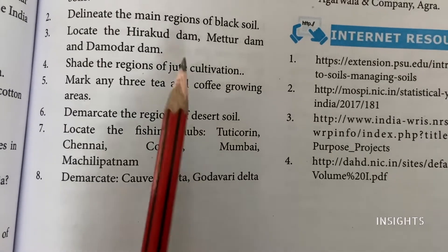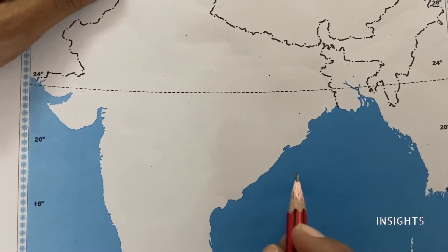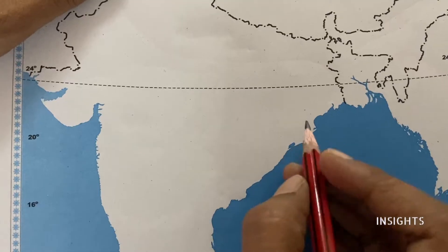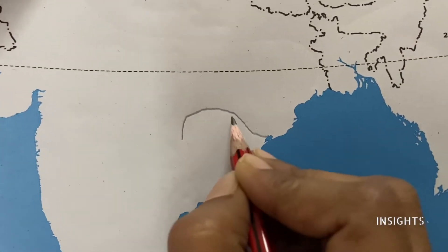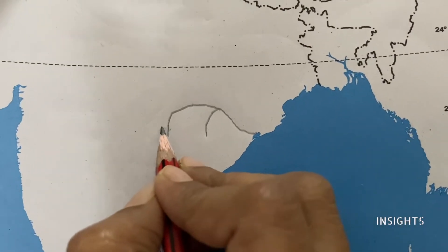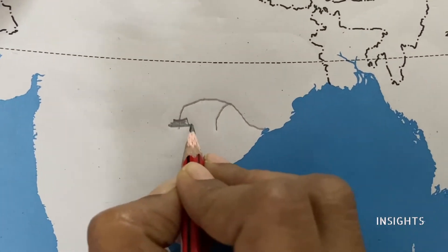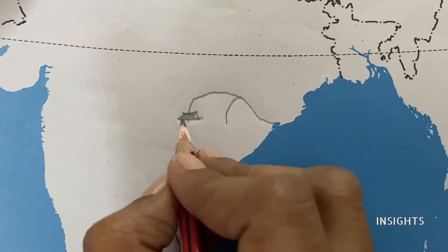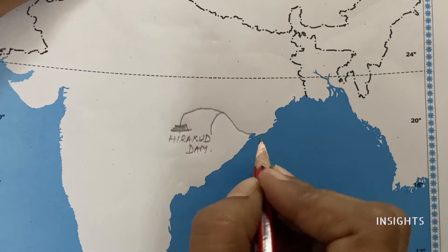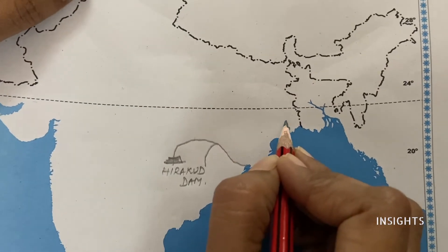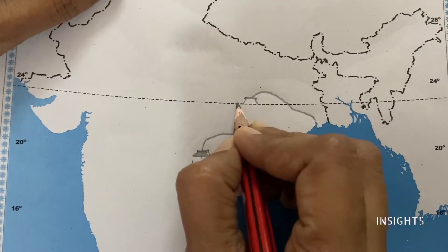Let us see how to do this map. If a dam is to be marked, you can draw the dam directly, or you can draw the river and then mark the dam — I think it's better to do it that way. Let's get started with Hirakud Dam. The river is Mahanadi, and this is Hirakud Dam. Next, Damodar Dam — it is on the river Damodar. This is the symbol given in the book, so let's stick to the same.